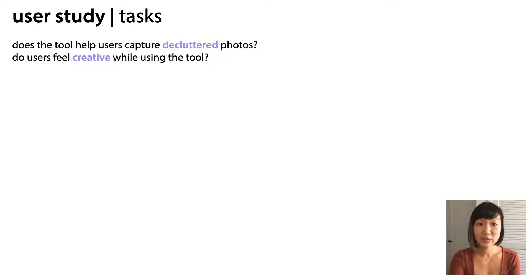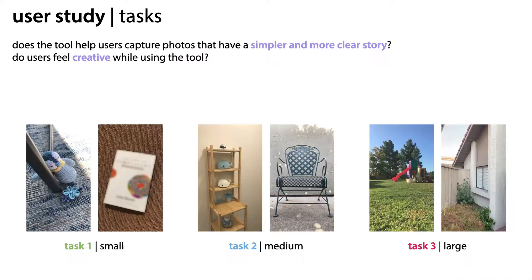Given this tool, we wanted to understand if it could help users capture more clear and decluttered photos, and if users felt creative while using the tool. Since we needed to run remote studies, we had participants select two different locations with subjects of three different scales: small, medium, and large. Thus, participants completed a total of six photo tasks, three at each of two locations of their choosing. Here are a few participant photos for each task to give you a sense of the differences in scale.